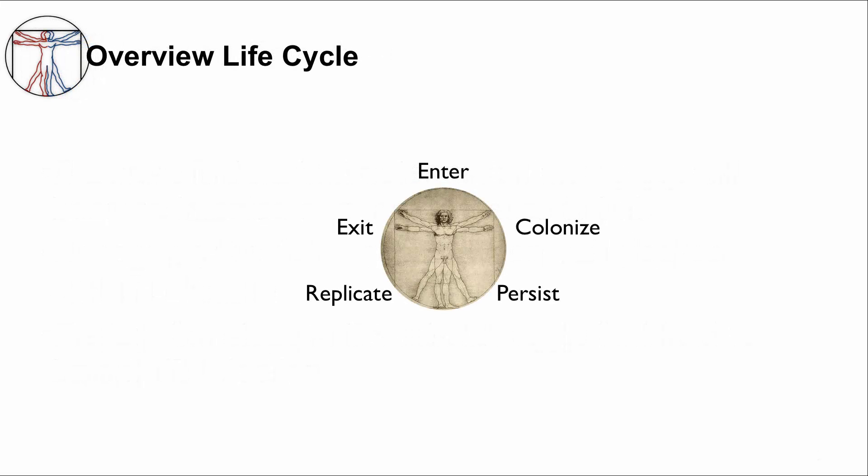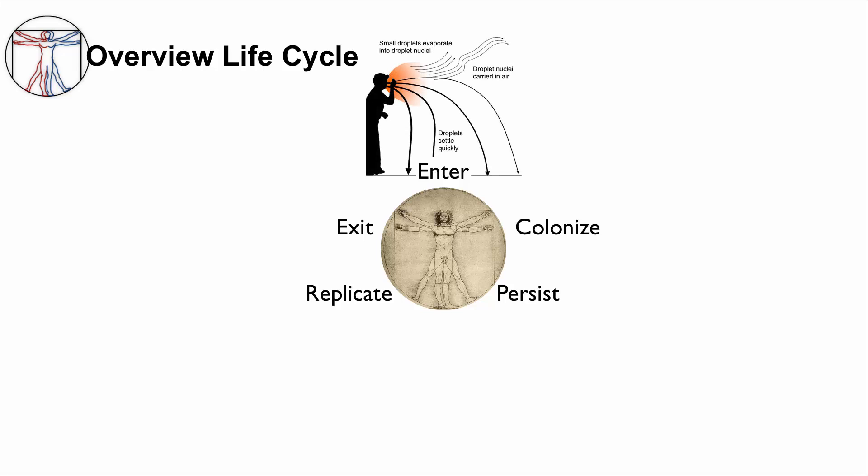Here's an overview of the MTB lifecycle that we have shown you before using our framework. The first step is enter. In an infected person, MTB is transmitted through respiratory droplet nuclei. A person's cough or sneeze produce these small droplets, which then evaporate into dried out droplet nuclei and become airborne for hours.